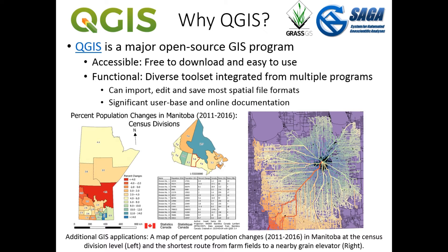As an open source program, it's free to download online with underlying code also provided. It is advantageous as it emphasizes its graphical user interface, resulting in an intuitive and easy-to-use program. It integrates its own tool sets with those from other established open source GIS, such as Saga and Grass tool sets, as well as integrating user-created plugins, resulting in a diverse functionality.